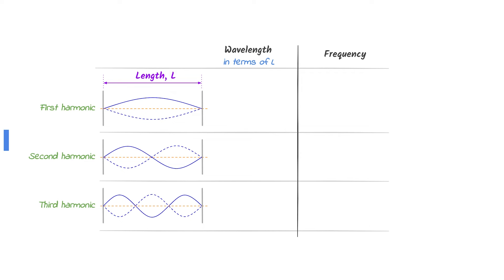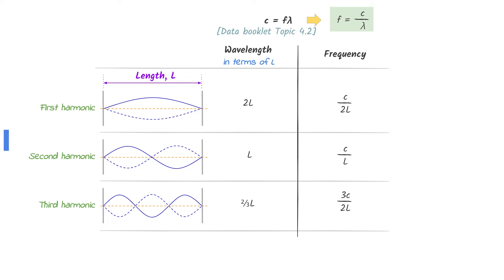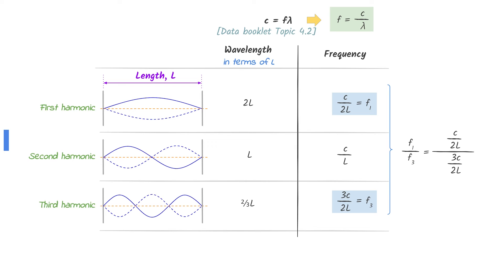Here are the first three harmonics of a standing wave formed on a string fixed at both ends. First, determine the wavelength in terms of the length L of the pipe. Next, use the equation given in the data booklet to find the frequency of the standing wave, leaving the speed of wave as C. The frequency of the first harmonic is C over 2L and the frequency of the third harmonic is 3C over 2L. Divide F1 by F3, cancel out, to find your answer.